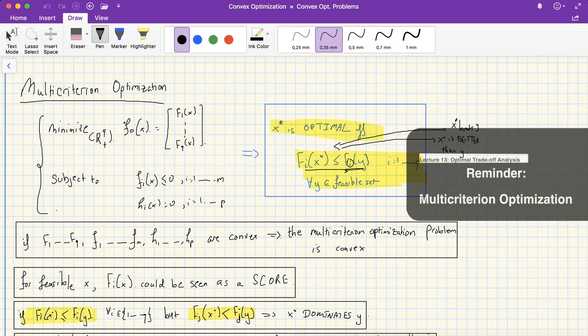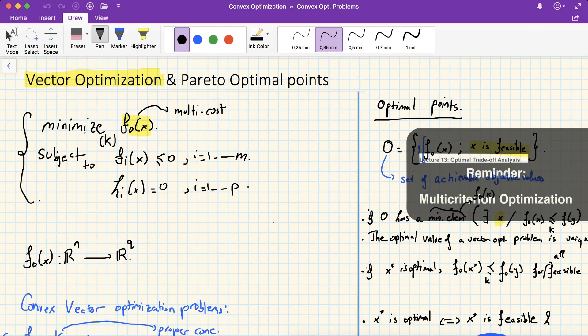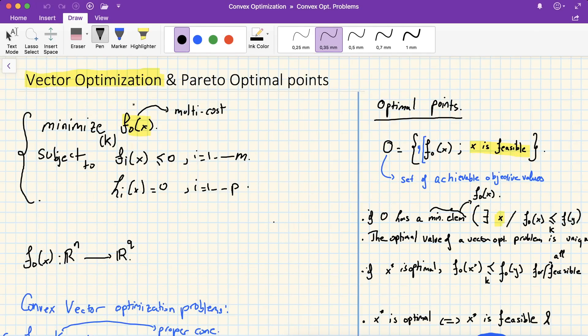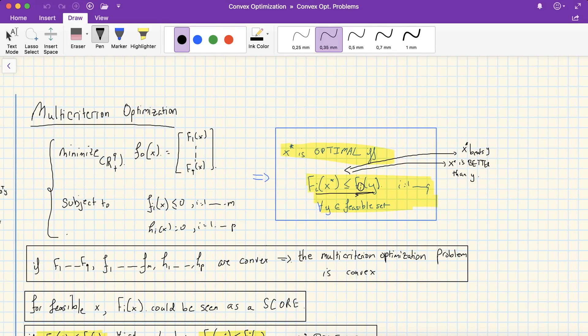As a reminder, multi-criterion optimization is a particular instance of vector optimization. So vector optimization aims at minimizing a multi-cost, a functional vector subject to inequality and equality constraints. Now multi-criterion optimization is a particular case when we pick the proper cone k to be r plus. So basically we're just choosing x to minimize all costs simultaneously.